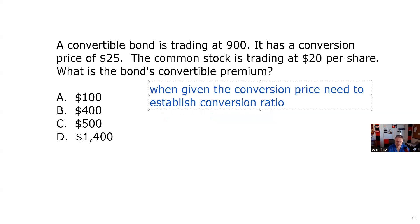So these conversion terms are based on par. The way we're going to do that is we're going to take par, which is a thousand, and we're going to divide by the conversion price, which in this case is $25. And that gives us the conversion ratio. And so it's 40 to one.